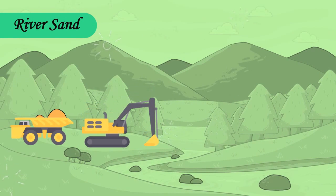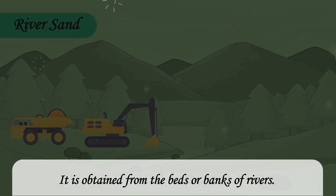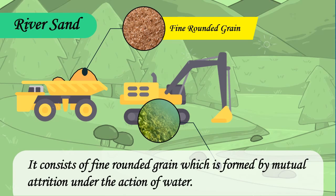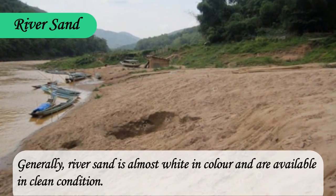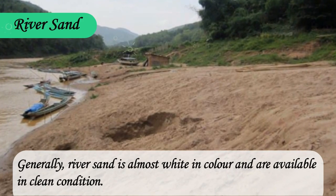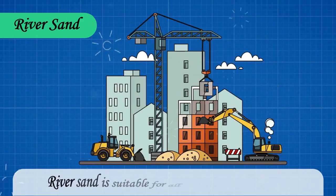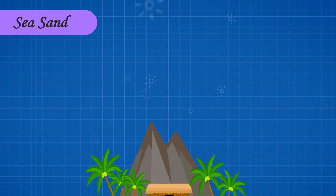River sand: It is obtained from the beds or banks of rivers. It consists of fine rounded grains which are formed by mutual attrition under the action of water. Generally, river sand is almost white in color and is available in clean condition. River sand is suitable for all construction works.